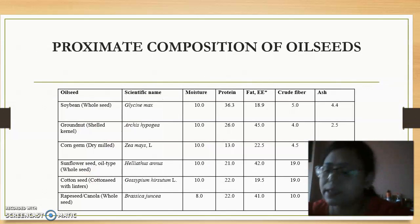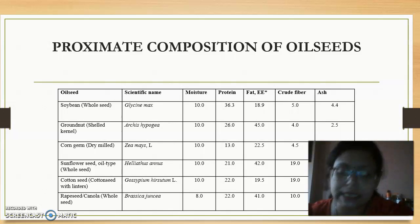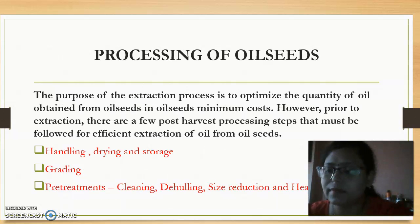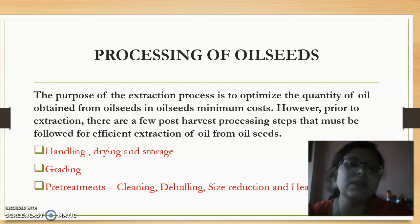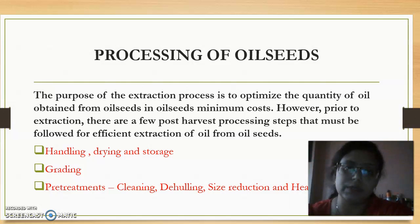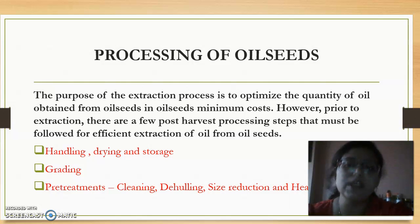This is the proximate composition of the oil seeds that are usually consumed in India. The extraction of an oil seed is aimed at producing the maximum amount of oil with minimum cost, with optimum retention of the organoleptic as well as nutritional properties. So prior to extraction, some post-harvest processing steps are necessary for efficient extraction of oil.